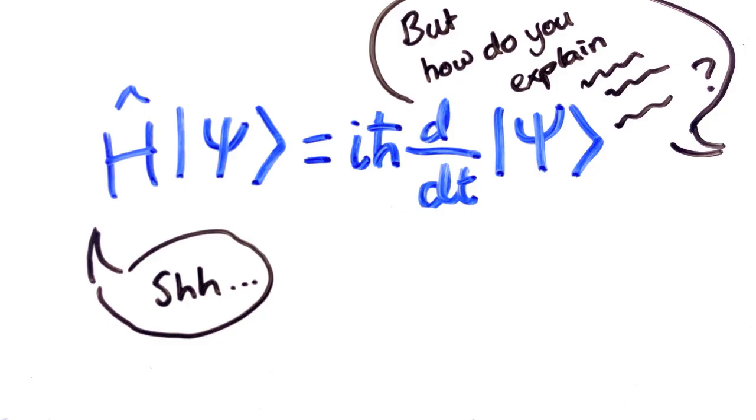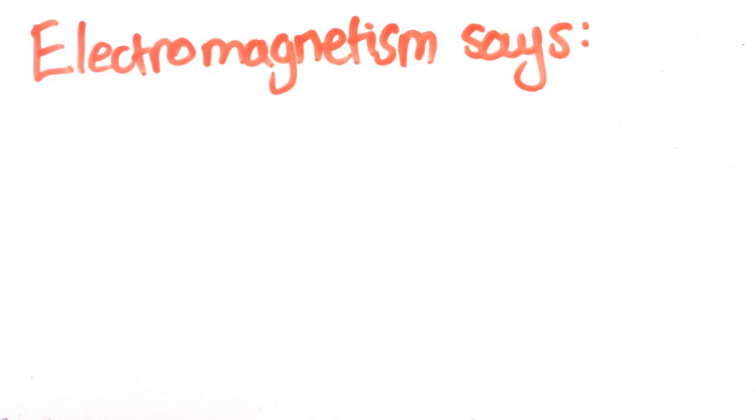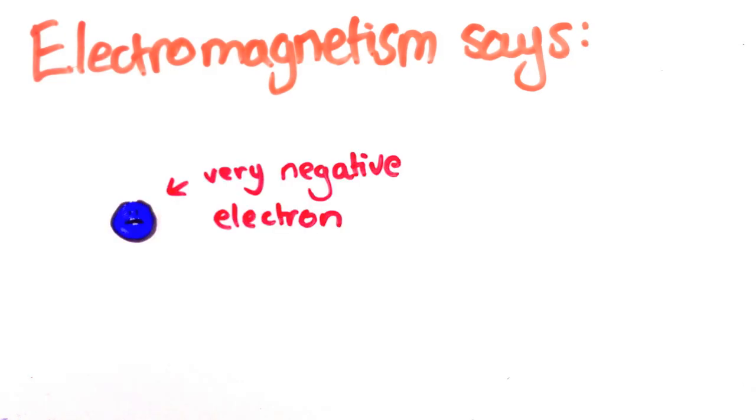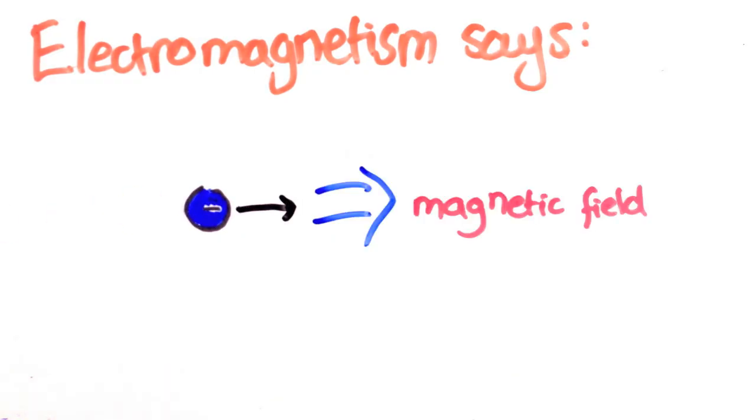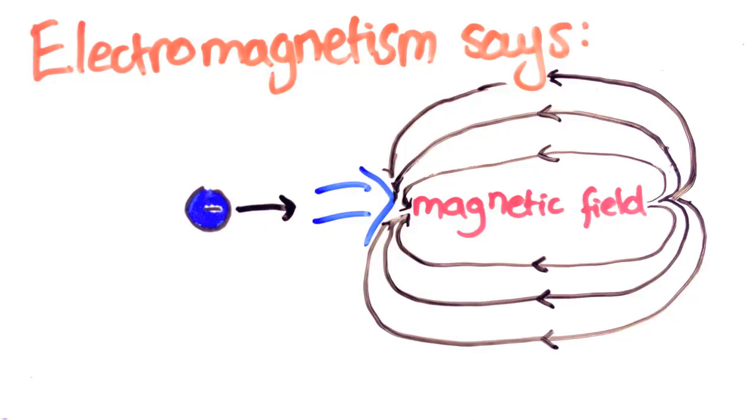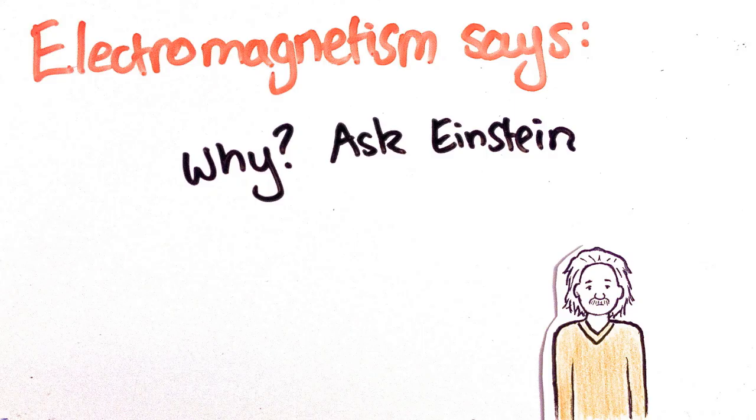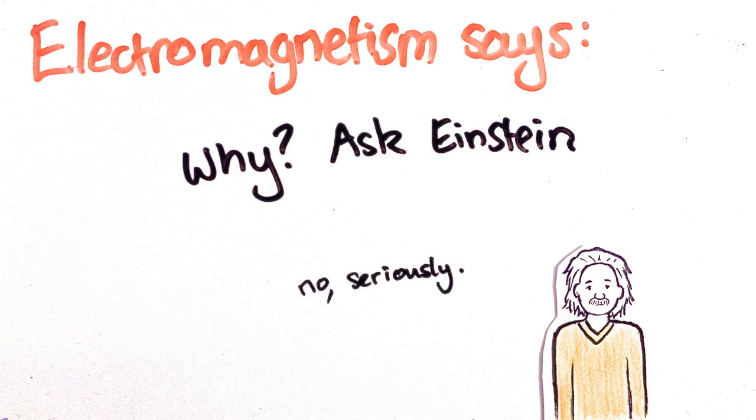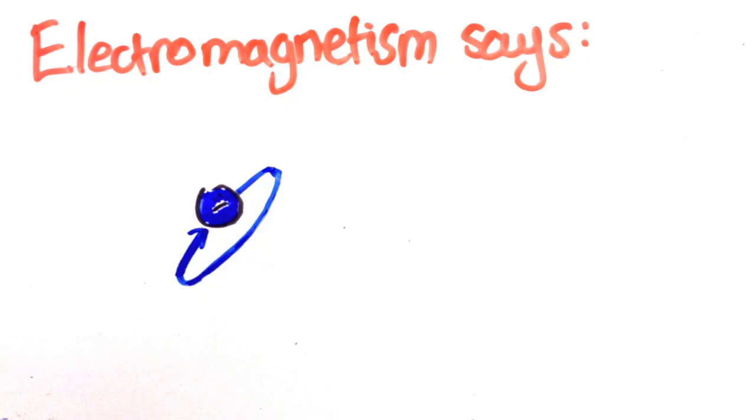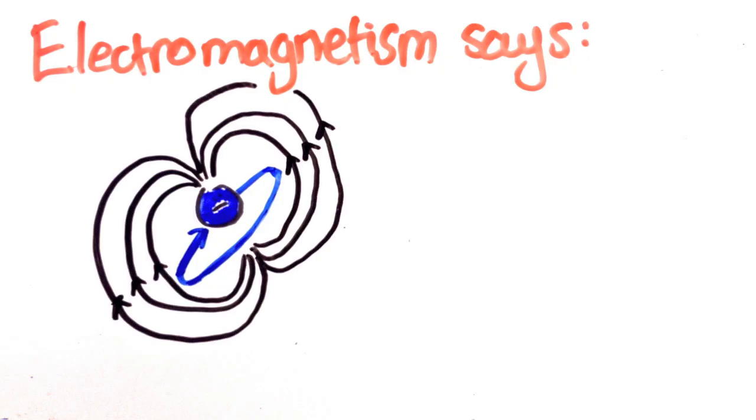To understand this we're going to need one piece of classical electromagnetism theory. Whenever a charged particle moves it creates a magnetic field. This is pretty amazing and you can see it for yourself by putting a compass next to a charge carrying wire. In fact if you have a charged particle going in a small loop, this not only creates a magnetic field, that field pretty much looks like it's from a bar magnet.